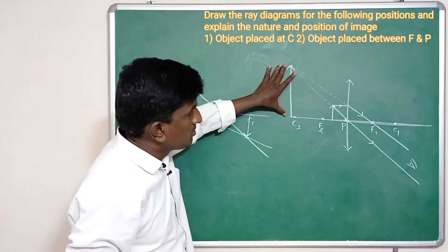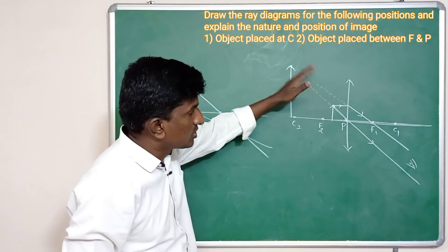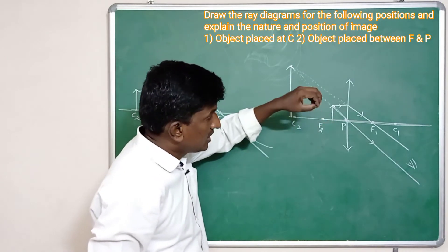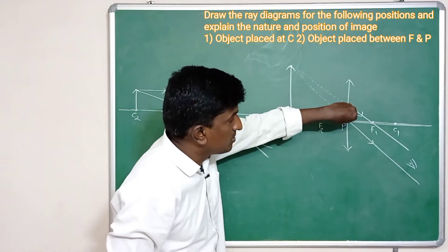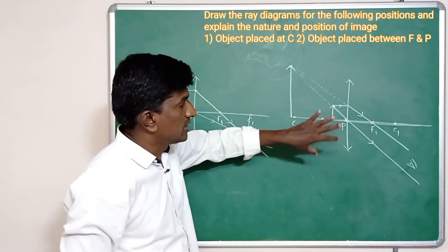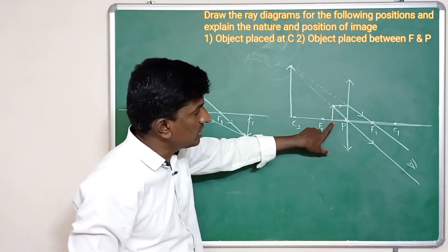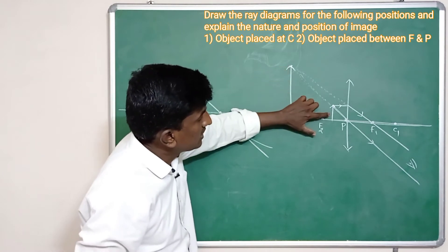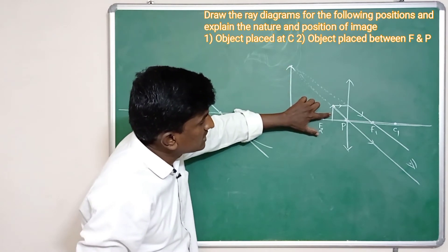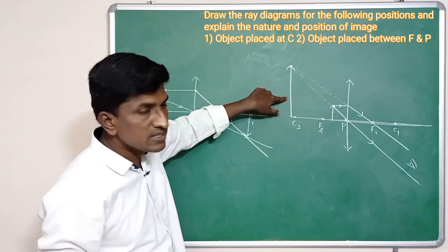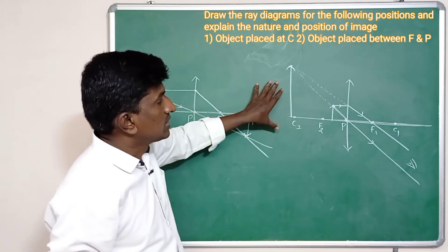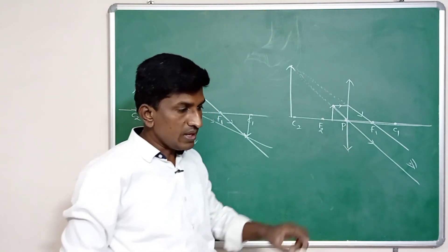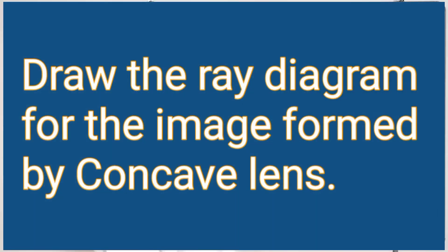The image is erect — above the principal axis, same as the object. The image appears on the same side of the object, inside the lens. The image formed is enlarged — bigger than the object. The object is smaller and the image size is bigger. This is about the object when placed between focus and optical center.